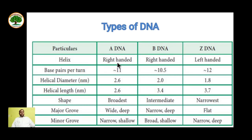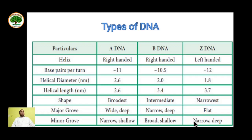This table summarizes the properties of the three DNA forms. A and B DNA are right-handed; Z-DNA is left-handed. Base pairs per turn: A has 11, B has approximately 10.5, and Z has 12. Helical diameter: A is 2.6 nm, B is 2.0 nm, Z is 1.8 nm. Helix length per turn: A is 2.6 nm, B is 3.4 nm, Z is 3.7 nm. Shape is broadest for A, intermediate for B, narrowest for Z. Major grooves: A is wide and deep, B is narrow and deep, Z is flat. Minor grooves: A is narrow and shallow, B is broad and shallow, Z is narrow and deep.